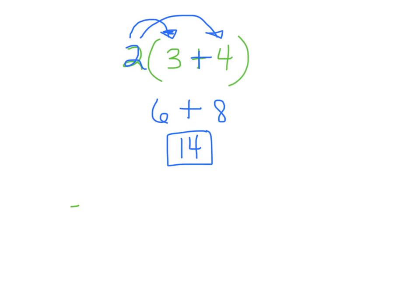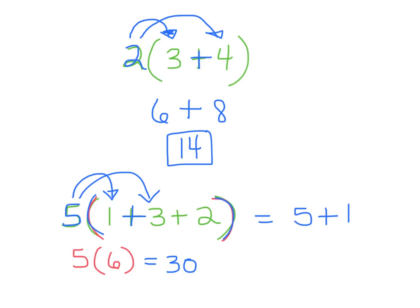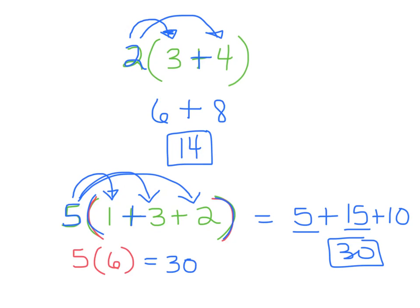Let me prove another one. We have 5 times (1 plus 3 plus 2). First using order of operations: inside the parentheses, 1 plus 3 is 4, plus 2 is 6. So this says 5 times 6, which is 30. Now using the distributive property: 5 groups of 1 is 5, plus 5 groups of 3 is 15, plus 5 groups of 2 is 10. Adding up: 5 plus 15 is 20, plus 10 is 30 — the same answer.